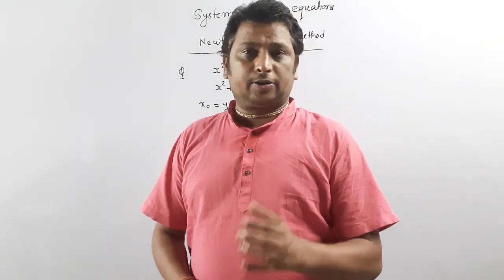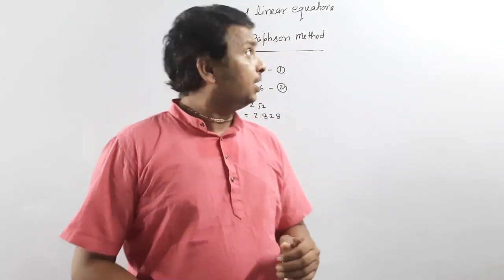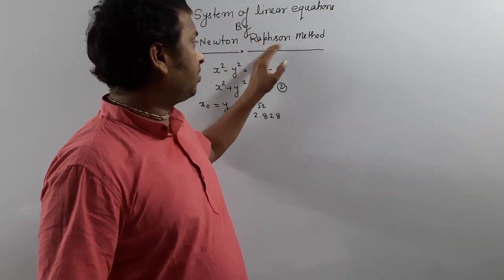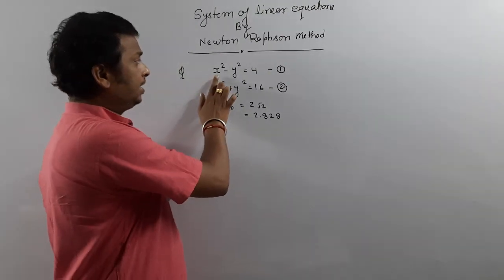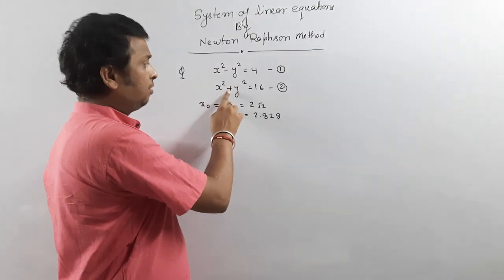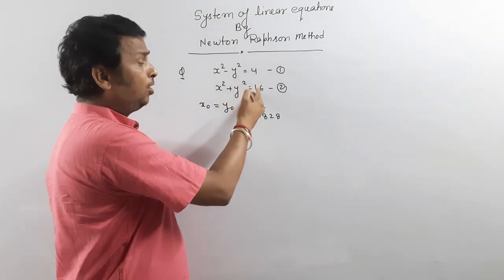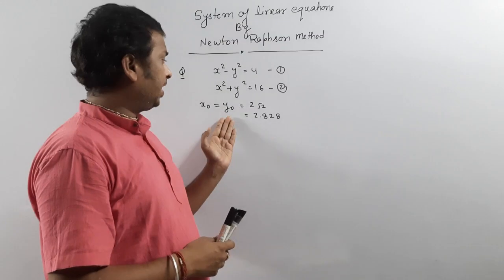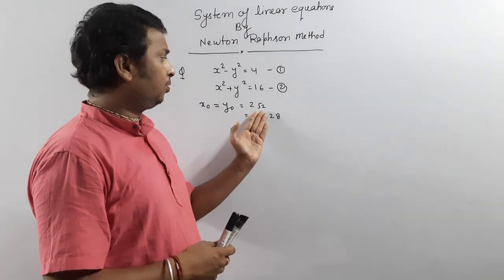Hello friends, today I am going to explain how we solve a system of linear equations by the Newton-Raphson method. For that purpose, I have taken one question here: x squared minus y squared is equal to 4, and x squared plus y squared is equal to 16. This is a non-linear system of equations. The initial root is taken as x0 equals y0 equals 2 root 2.